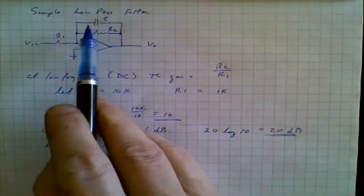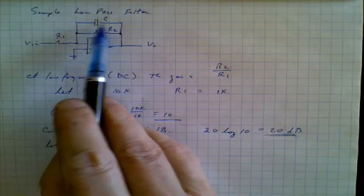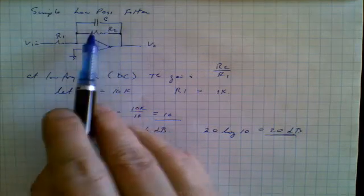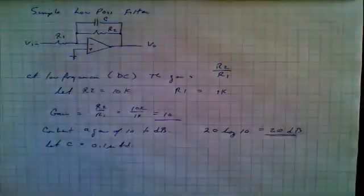Now, pretty clearly at some point, at some high frequency, this capacitor can act like a short circuit. And the gain of the circuit isn't going to be 20 dB anymore. The gain of the circuit is going to be like zero.